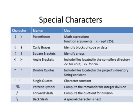Parentheses are used for math expressions and function arguments. Curly braces identify blocks of code or data. Square brackets are used to identify arrays. Angle brackets are used to locate the compiler's directory for include files, or as less-than and greater-than operators for cin and cout. Double quotes indicate a project directory or a string constant. Single quotes are for defining a single character.